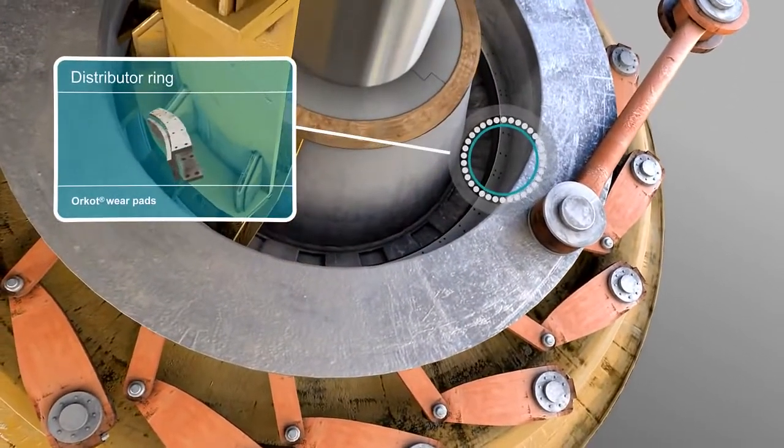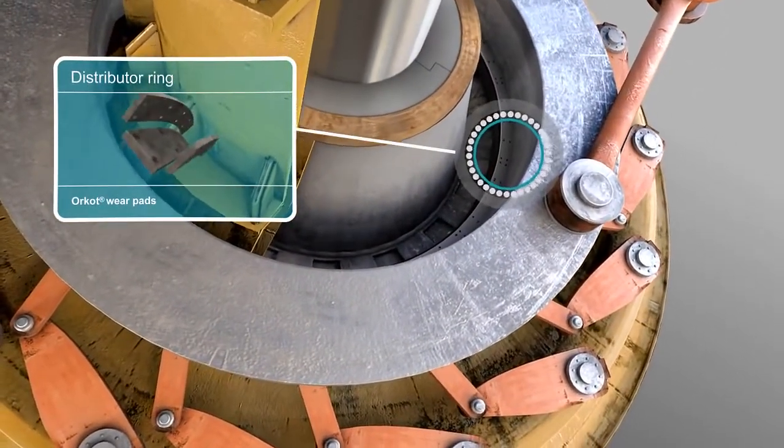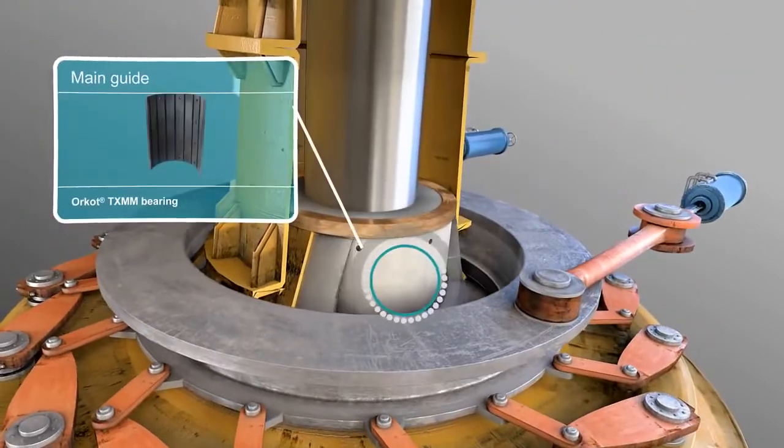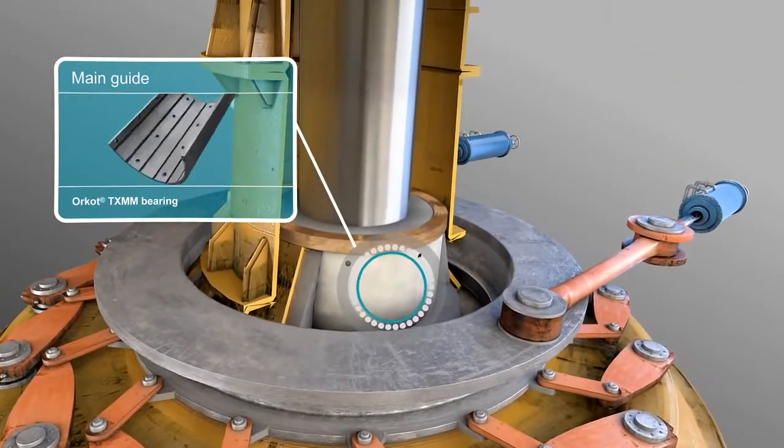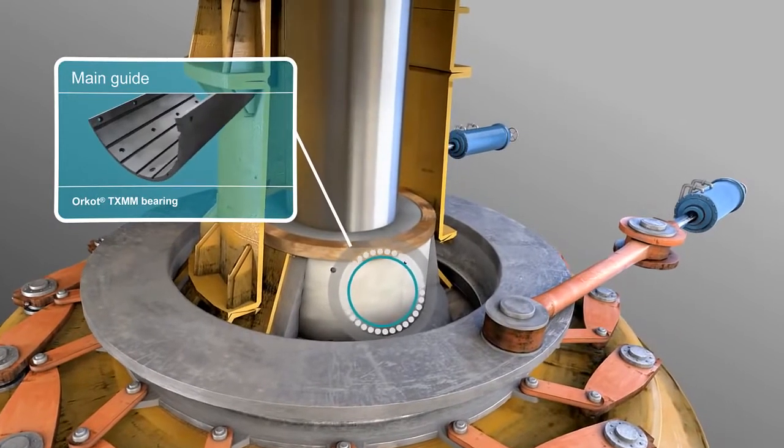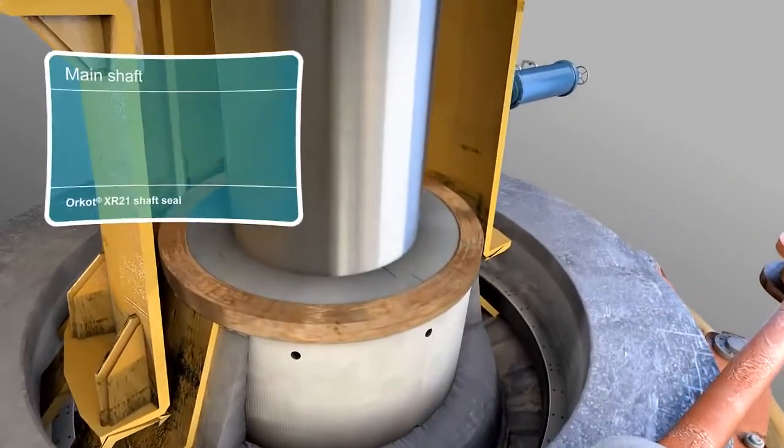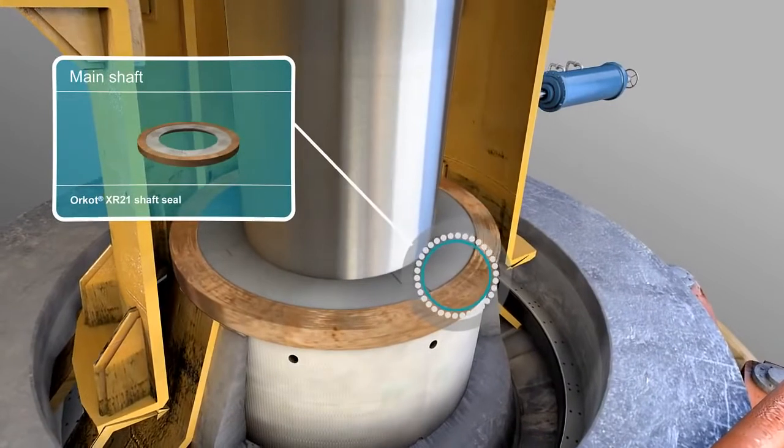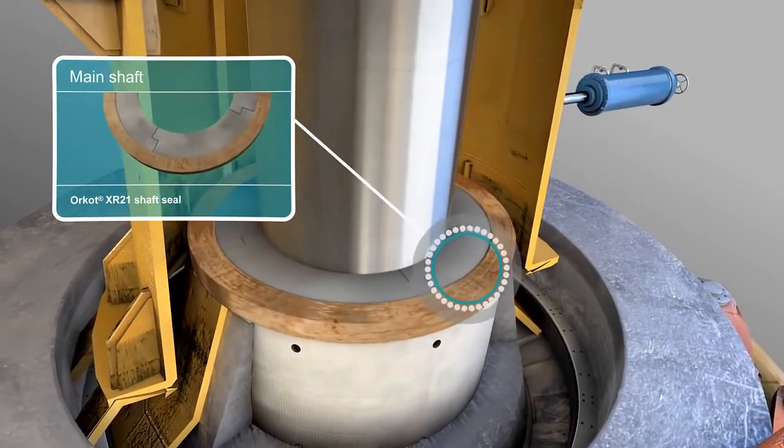Orcott wear pads on the distributor ring guarantee low friction. A self-lubricating Orcott bearing on the main guide prevents metal-to-metal contact and allows the turbine to run smoothly. Main shaft seals prevent water from escaping and block particles from the bearing area.